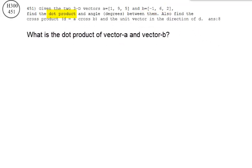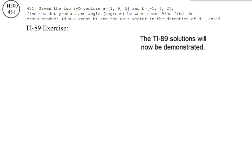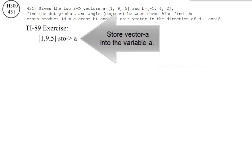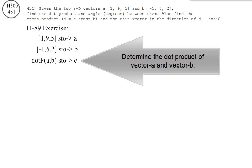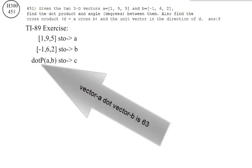What is the dot product of Vector A and Vector B? The TI-89 solutions will now be demonstrated. Store Vector A into Variable A, store Vector B into Variable B, and determine the dot product. Vector A dot Vector B is 63.